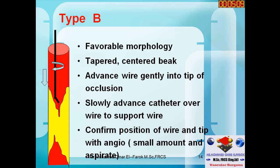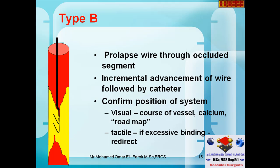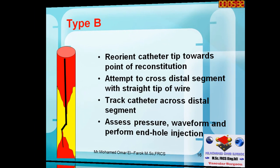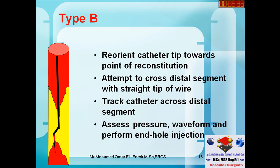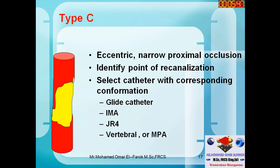For Type B, which has a more favorable morphology with a tapered central break, try to go through this break and ride your re-canalization smoothly to remain intra-luminal. Use wire movement supported by either a catheter or a balloon and negotiate the occlusion as you advance. Re-orient the catheter tip toward the point of reconstitution and track the catheter across the distal segment to reach the distal end.